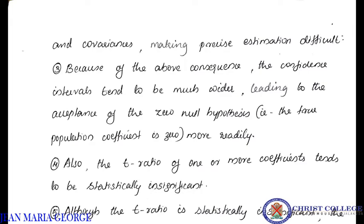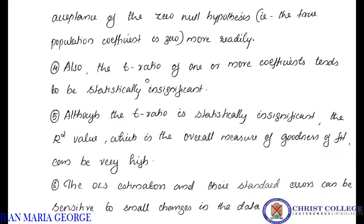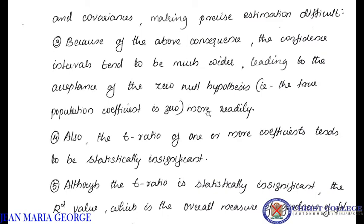Third, because of the above consequence of large variance, the confidence interval will be much wider. If we consider the confidence interval, the actual value is higher than the true value — it is wider. This means there is a possibility of accepting a false null hypothesis, which leads to estimation error. That is why we do not have a precise estimation — we have a wider variance and a wider confidence interval.